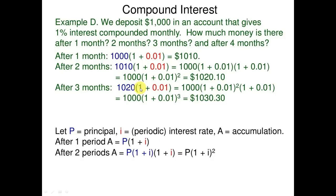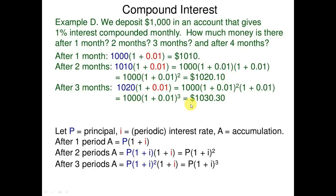After three months: 1020.10 into (1 + 0.01) equals 1000 into (1 + 0.01) squared into (1 + 0.01), that is equal to 1000 into (1 + 0.01) cubed, that is 1030 dollars.